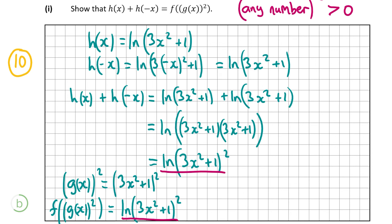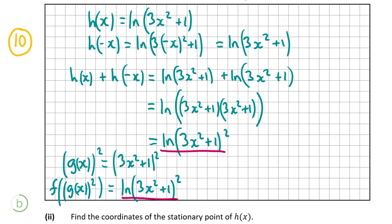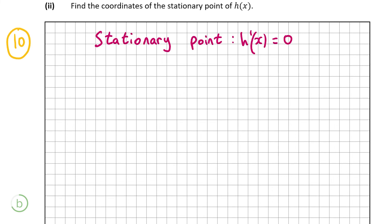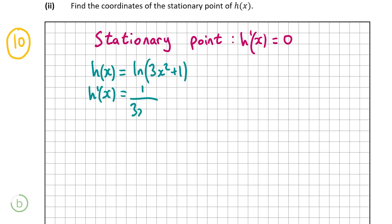That's our answer for B part 1. Now we're moving on to the final part, B part 2, where we have to find the coordinates of the stationary point of h(x) — this part is also worth 10 marks. To find the stationary point we put the first derivative equal to zero. h(x) equals ln(3x² + 1), so we differentiate: when differentiating the natural logarithm, you put 1 over the argument and multiply by the derivative of that argument. So it's 1 over (3x² + 1) times the derivative of (3x² + 1).